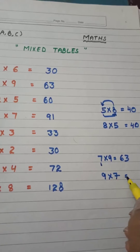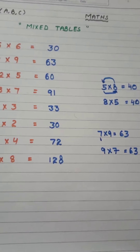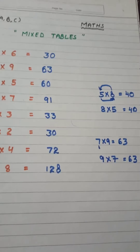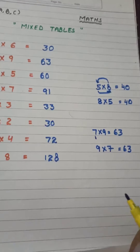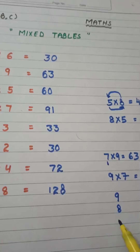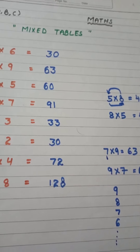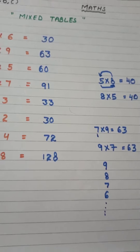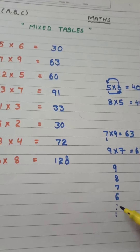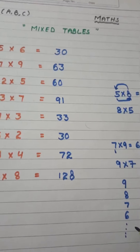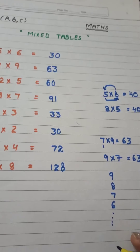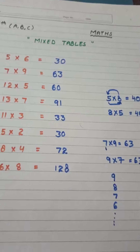One more thing I want to bring to your notice: some of you used to use the trick of writing the table of nine like — nine, eight, seven, six. Please try to learn the table of nine by heart. Do not always use that idea; it is not good for us. Take that trick as fun, but please do not follow it all the time.